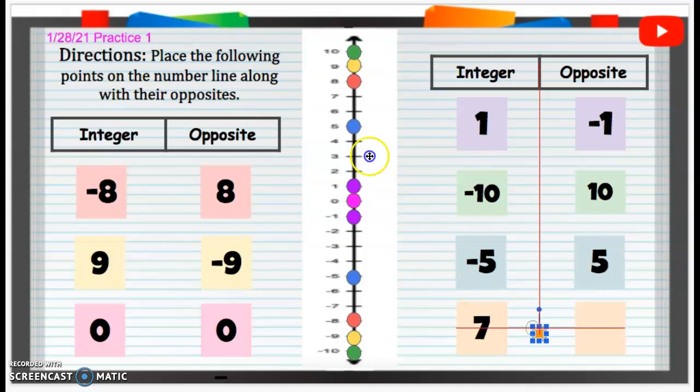Then we're going to plot a seven. So here's a seven up here. And the opposite of seven is going to be negative seven. So then I'm going to plot negative seven. We ruined our stoplight. Alright, and then that's going to be it for our practice number one. Great job.